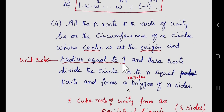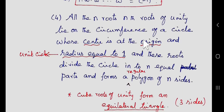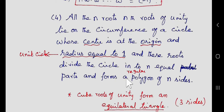The next property is that all the nth roots of unity lie on the circumference of a unit circle, meaning radius equal to 1, with center as the origin. At the same time, these roots divide the circle into n equal parts. In cube roots of unity, the circle is divided into 3 equal parts, and joining those 3 roots gives an equilateral triangle. In 4th roots of unity, the circle is divided into 4 equal parts, and joining them gives a square.